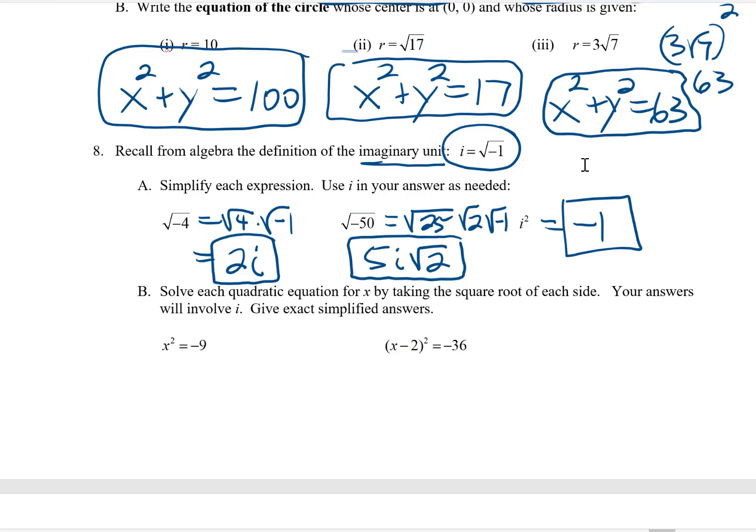So if I want to solve this for x, again, in the world of complex numbers, I can square root each side. Don't forget the plus or minus. And then I can simplify this the same way we were just doing. That negative on the inside is going to come out as an i. And of course, the square root of 9 is equal to 3. And so my two solutions here are positive 3i and negative 3i.